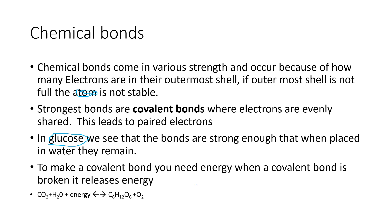CO₂ tells you there is one carbon and two oxygens. In carbon, you don't need to write the one because it's assumed. For water (H₂O), you have two hydrogens and one oxygen. Looking at the sugar molecule (C₆H₁₂O₆), you have 12 hydrogens for every 6 oxygens, which corresponds to six water molecules.